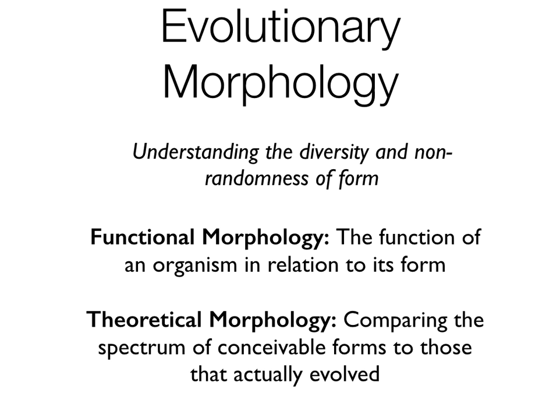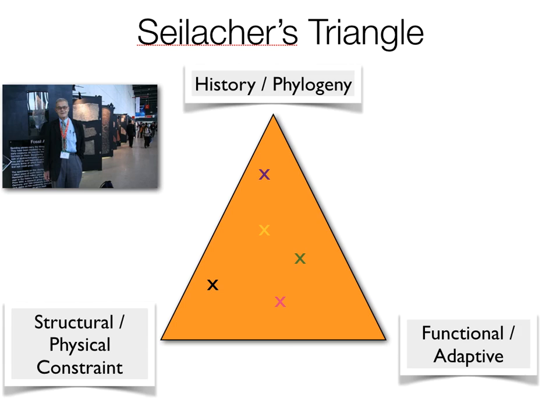We divide evolutionary morphology into two different categories. The first is functional morphology, which is how the function of an organism relates to its form, and the second is theoretical morphology, comparing the spectrum of conceivable forms to those that actually evolved.